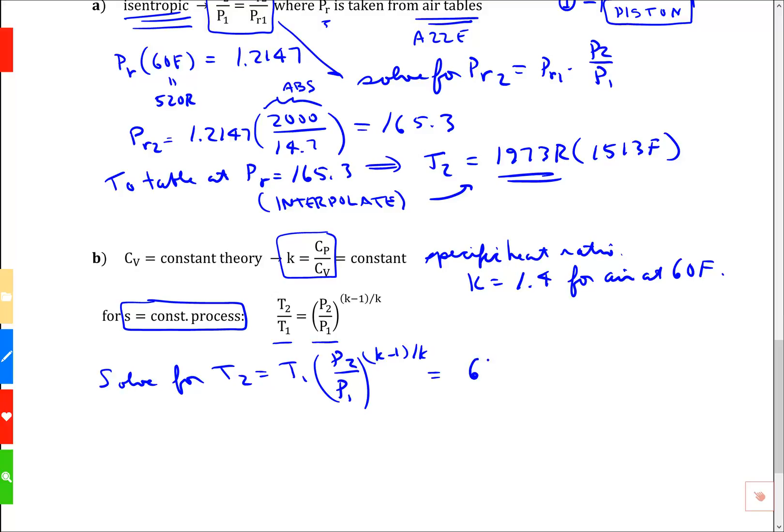We've got 60 Fahrenheit for T1, but it's got to be absolute, so we add 460. Any time you do an ideal gas calculation, you must use absolute temperature and absolute pressures. Our pressure ratio is 2000 PSIA divided by 14.7 PSIA. Our exponent is k minus 1, which is 0.4 divided by k, which is 1.4. When I compute that, I find that T2 equals 2116.6 Rankine.